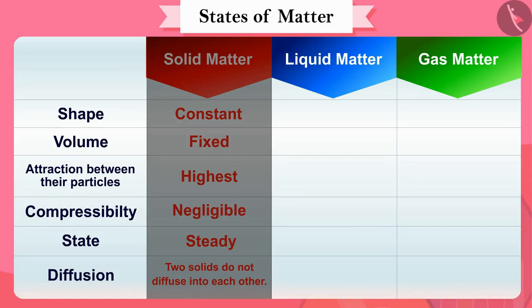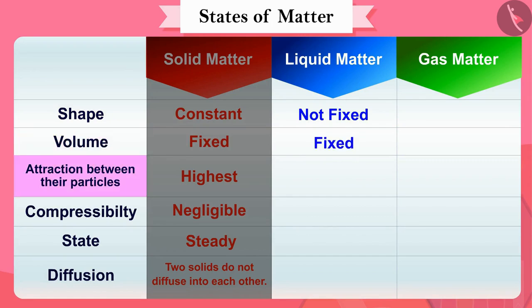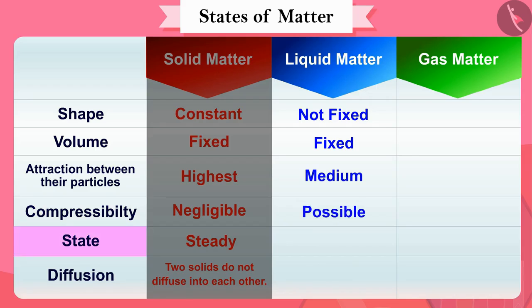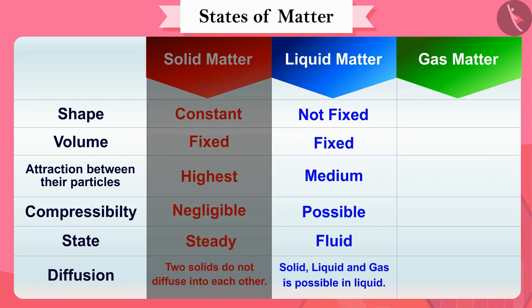We have seen that the shape of liquids is not fixed, but their volumes are fixed. The attraction between the particles of liquid is less than that of solid because the particles of liquid have more space — that is why compressibility of liquid is possible. In a liquid state, matter is not rigid but fluid, and diffusion of solid, liquid, and gas is possible in a liquid.